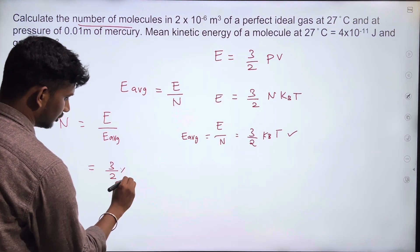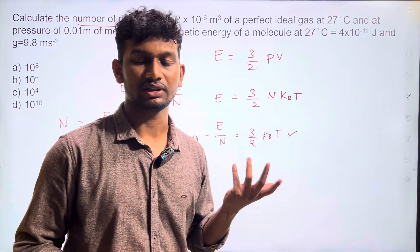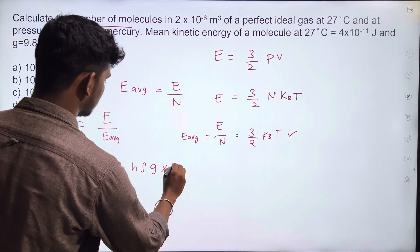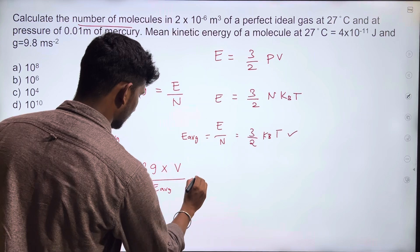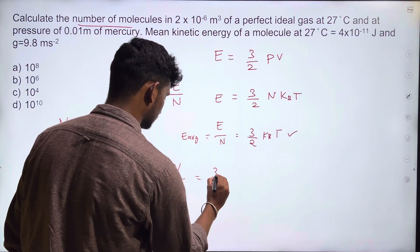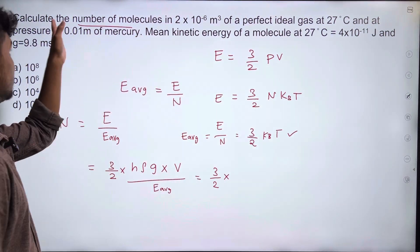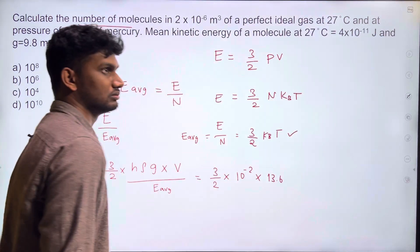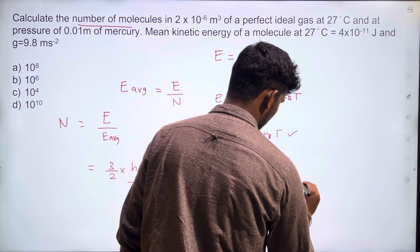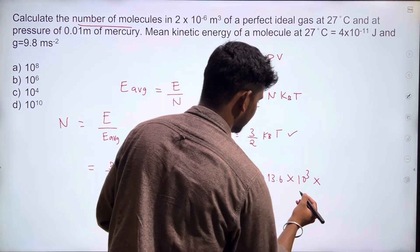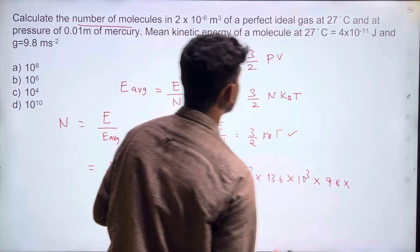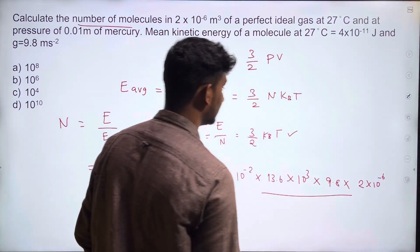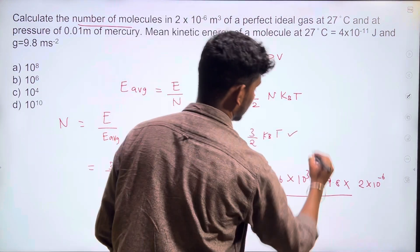E = 3/2 · P · V. But pressure is given as a height of mercury, so P = H · ρ · g. Therefore N = (3/2 · H · ρ · g · V) / E_avg. Substituting: H = 0.01 m = 10⁻², ρ = 13.6 × 10³ kg/m³, g = 9.8 m/s², V = 2 × 10⁻⁶ m³, and E_avg = 4 × 10⁻⁷ J.